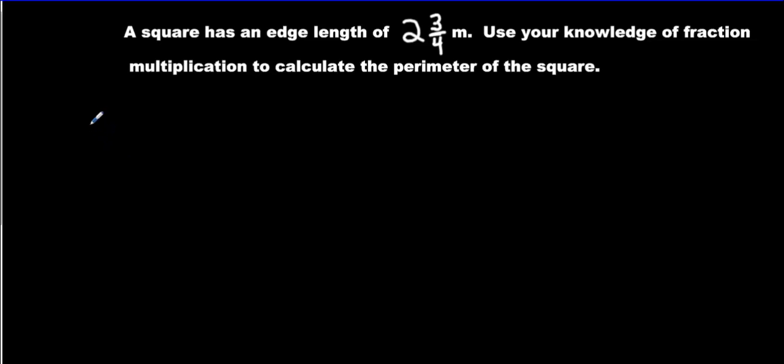Let's look at the first question. It says a square. What do we know about a square? We know that all the sides have to be the same length. So I will draw a picture to show my work. A square has an edge length of two and three quarter meters. The perimeter of the square.